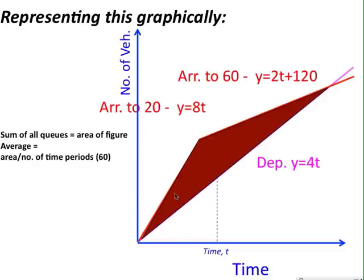And the average value, the average queue, the average vertical line at any given time, is equal to that total area, divided by the number of time periods we're looking at. In this case, 60.